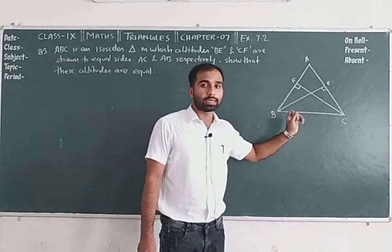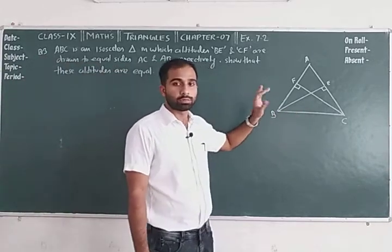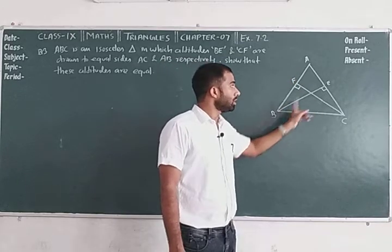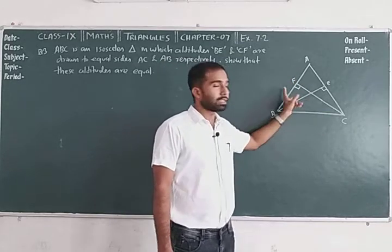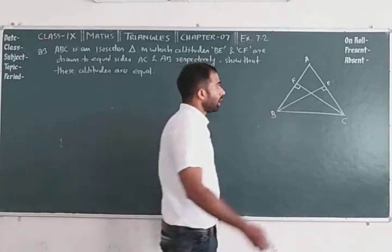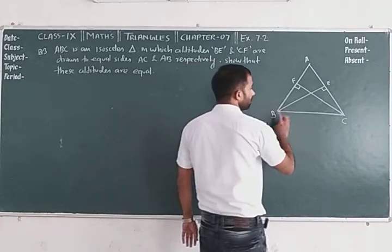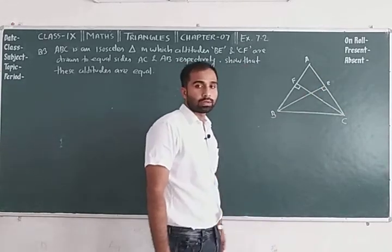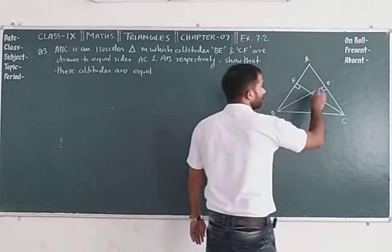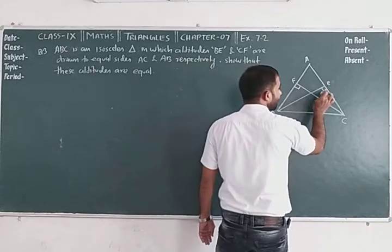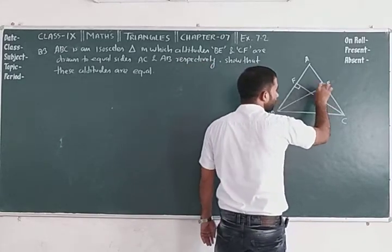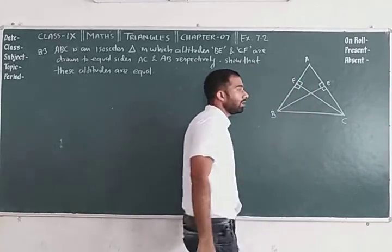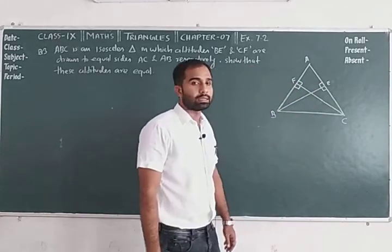The diagram is very important — let's understand it first. You have to prove that the two altitudes are equal. BE is perpendicular on AC, so angle E is 90 degrees. Similarly, CF is perpendicular on AB, so angle F is also 90 degrees.